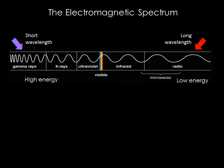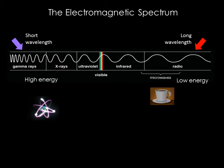Electromagnetic waves can range in size from less than the diameter of a hydrogen atom for gamma rays, to the size of a coffee cup for microwaves, and even larger than a football field for radio waves.